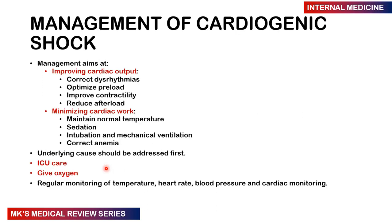For management of cardiogenic shock, our aim is to improve cardiac output. We want to correct any dysrhythmias, optimize the preload, improve cardiac contractility, and reduce the afterload. We also want to minimize cardiac work by maintaining normal temperature, sedating the patient, intubating them, and using mechanical ventilation if needed — as well as correcting any anemia, which is why a full blood count is important. Addressing the underlying cause is essential. Most patients will need ICU care, oxygen therapy, and regular monitoring of vitals including temperature, heart rate, blood pressure, and cardiac monitoring.